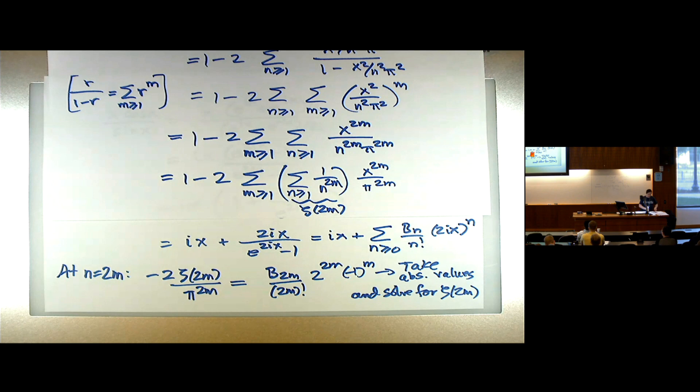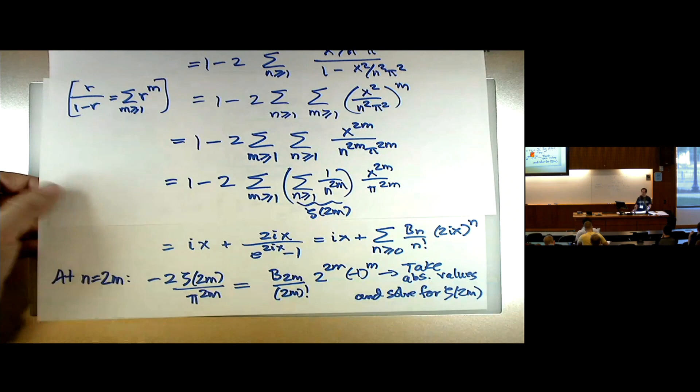I want to discuss now how the Riemann zeta function extends to Dirichlet L-functions, which are in the title of the course. Are there any questions?